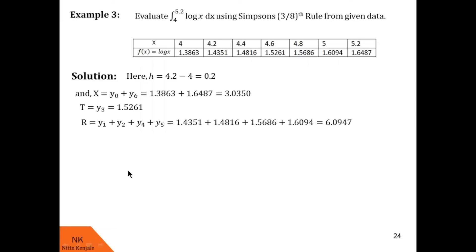Now let us substitute these values into Simpson's 3/8th rule. According to Simpson's 3/8th rule, value of this definite integral is given by 3h by 8 into x plus 2t plus 3r. Let us substitute values of h, x, t and r in this RHS. We found value of this integral to be 1.8278. I hope you understood these examples on Simpson's 3/8th rule.